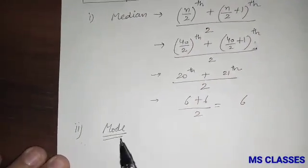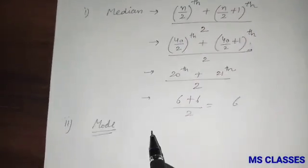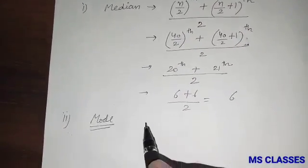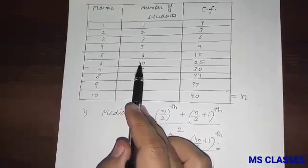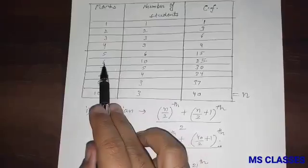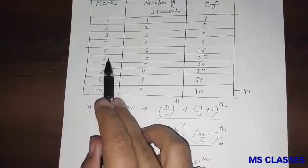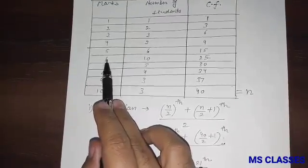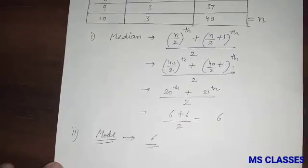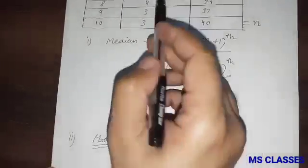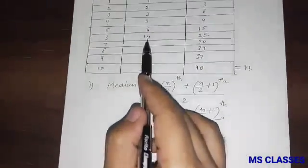For the mode, the maximum number of students is 10, and the corresponding mark is 6. Therefore, the mode is 6, corresponding to the highest frequency.